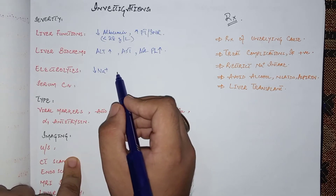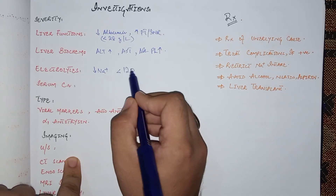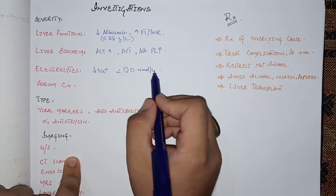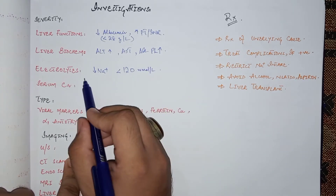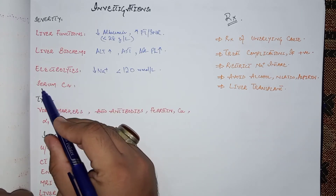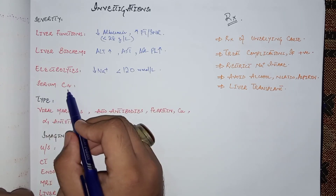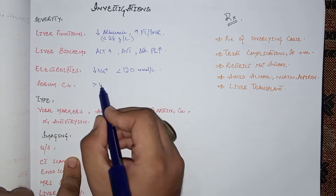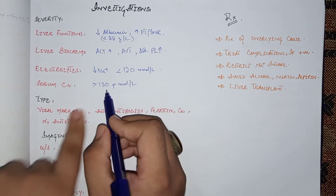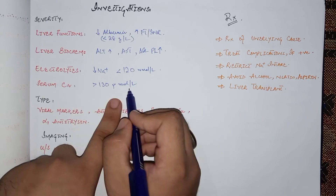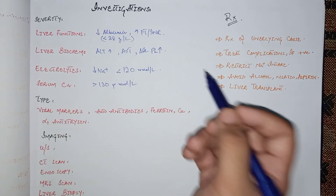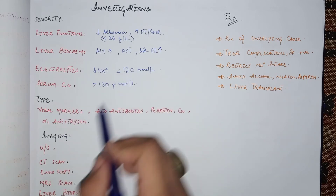In electrolytes, hyponatremia — especially sodium below 120 mmol/L — indicates the worst prognosis and suggests hepatorenal failure. If serum creatinine is greater than 130 micromoles per liter, it also indicates worse prognosis due to hepatorenal failure.